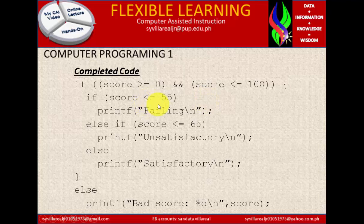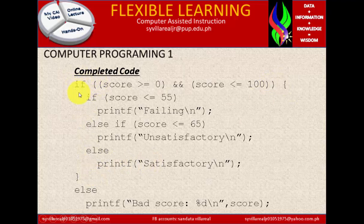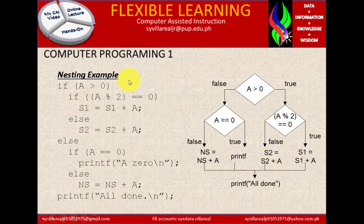Complete code: if score is less than or equal to 65, printf failing. Else if score is less than or equal to 65, printf unsatisfactory. Else, printf satisfactory. It's better to use begin and end curly braces when starting with if. Since this is a multiple if — if 1 and if 2 — it's better to use begin and end curly braces. Else, print bad score, then print the score.